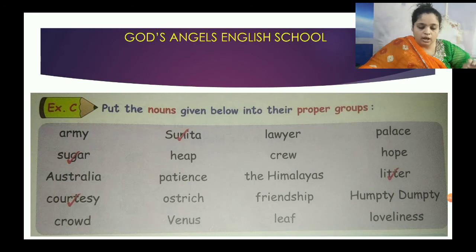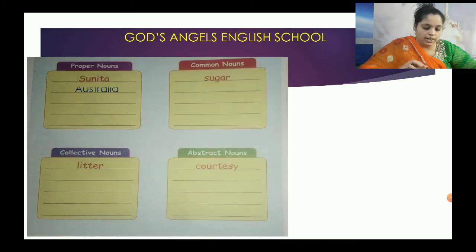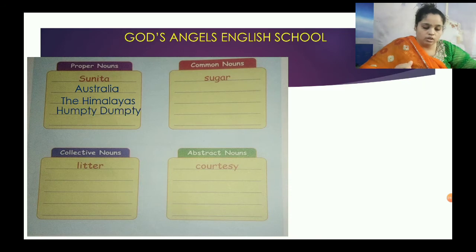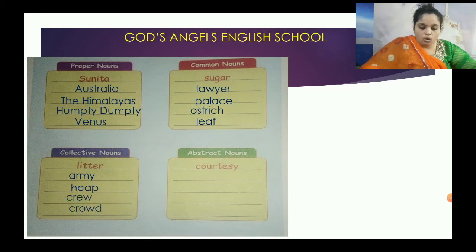Put the nouns given below into their proper groups. Australia — proper noun. Himalayas — proper noun. Humpty Dumpty — proper noun. Venus — proper noun. Sugar, lawyer, palace, hostage, heave — common noun. Army, herd, crew, crowd — collective noun. Hope, patience, friendship, loveliness — abstract noun.